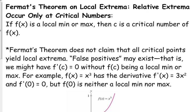It's one of those statements that you have to be careful about. So if it's a local minimum or maximum, then it occurs at a critical number — not necessarily vice versa. We do not always have a local minimum or max at every critical number.